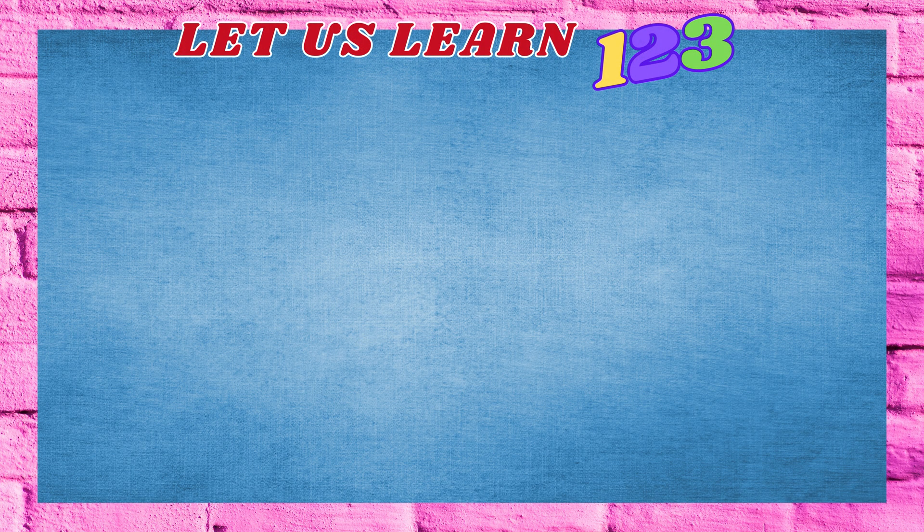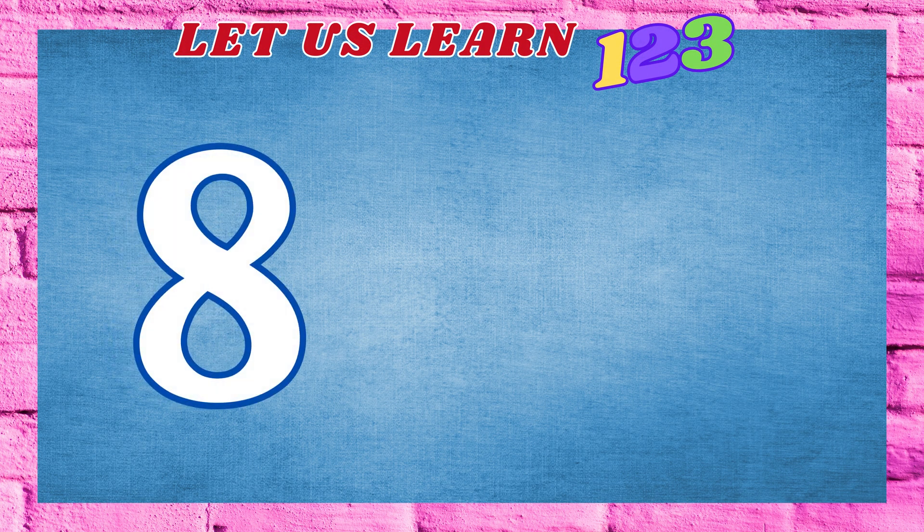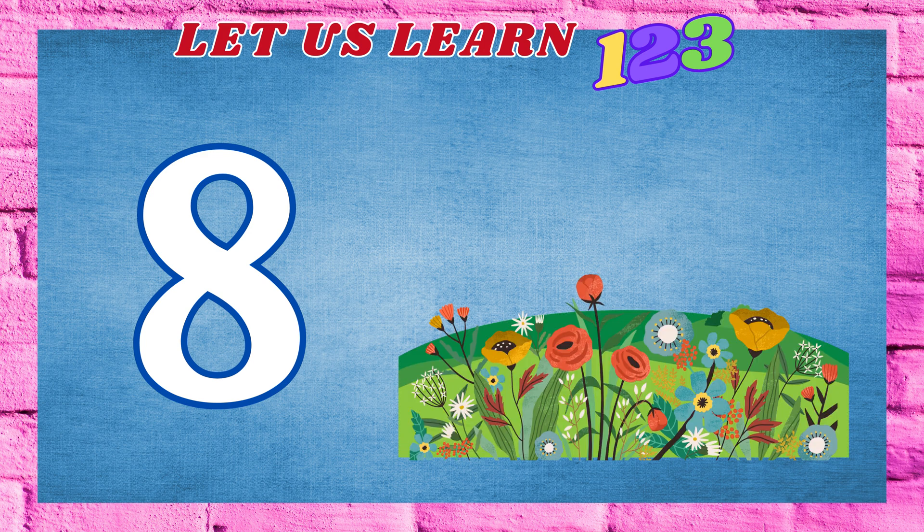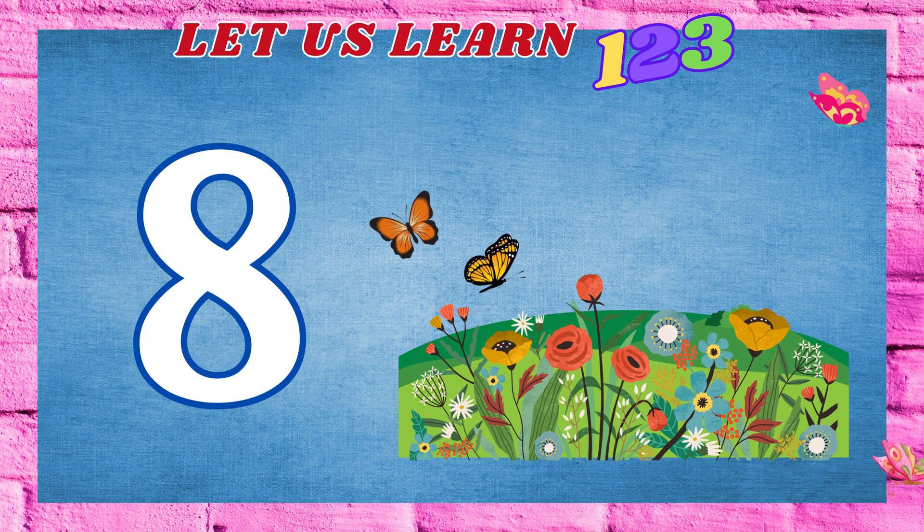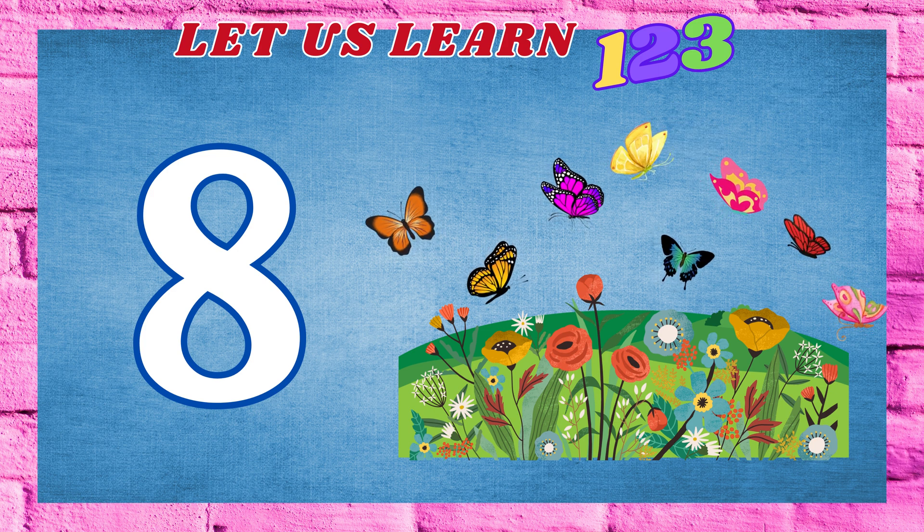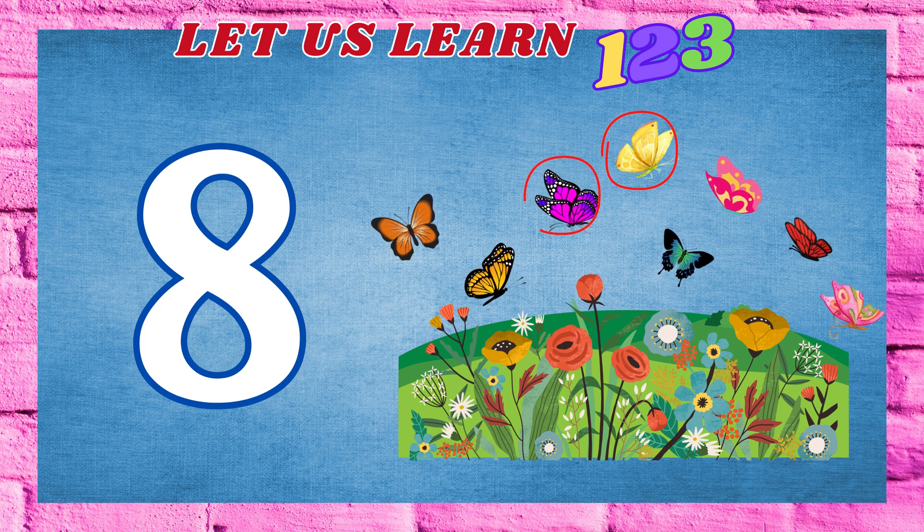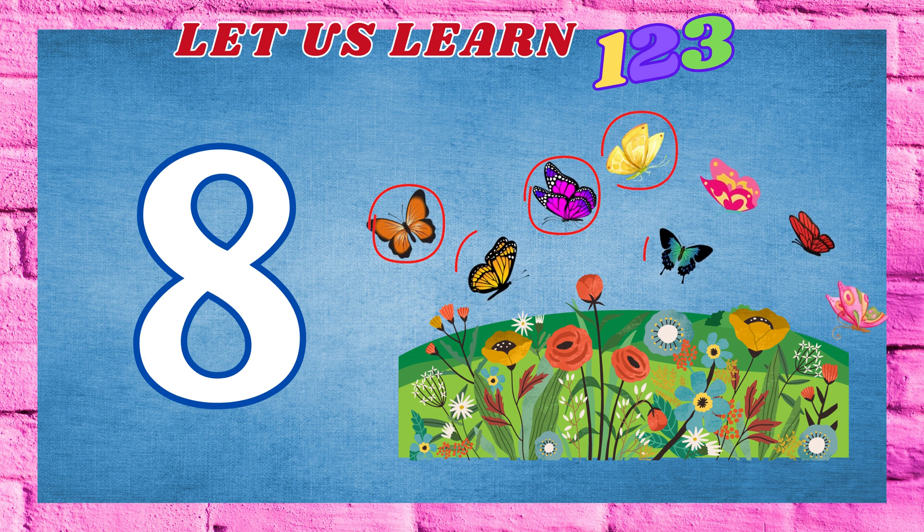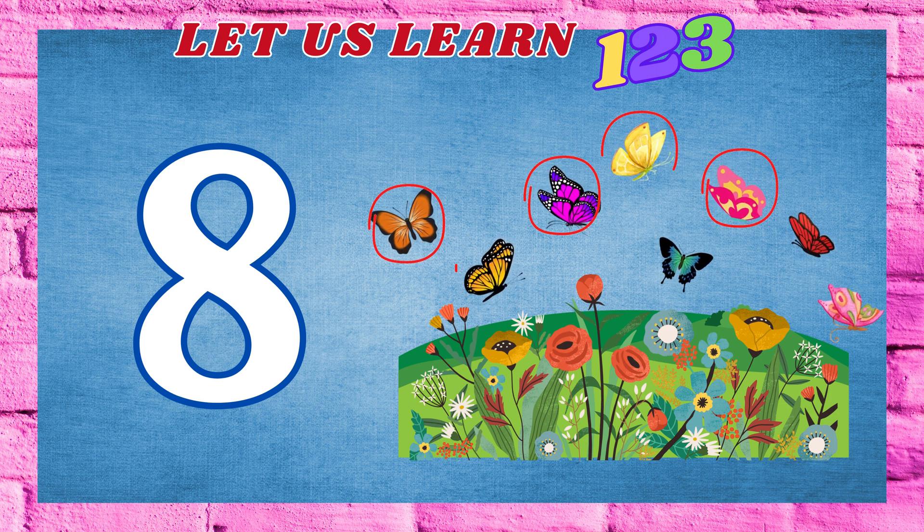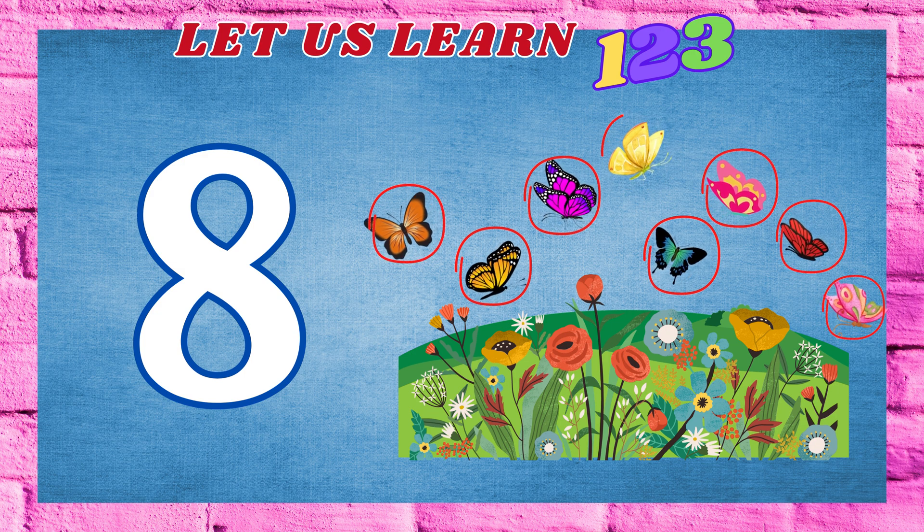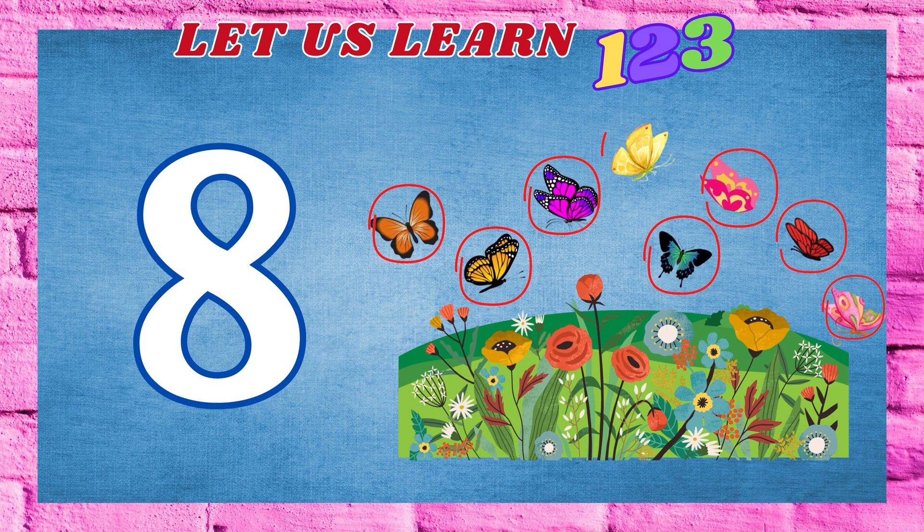Next, we have the twisty number 8. Isn't it magical? 8 butterflies dancing around the flowers. Now, let's count them together. 1. 2. 3. 4. 5. 6. 7. 8. We have eight butterflies.